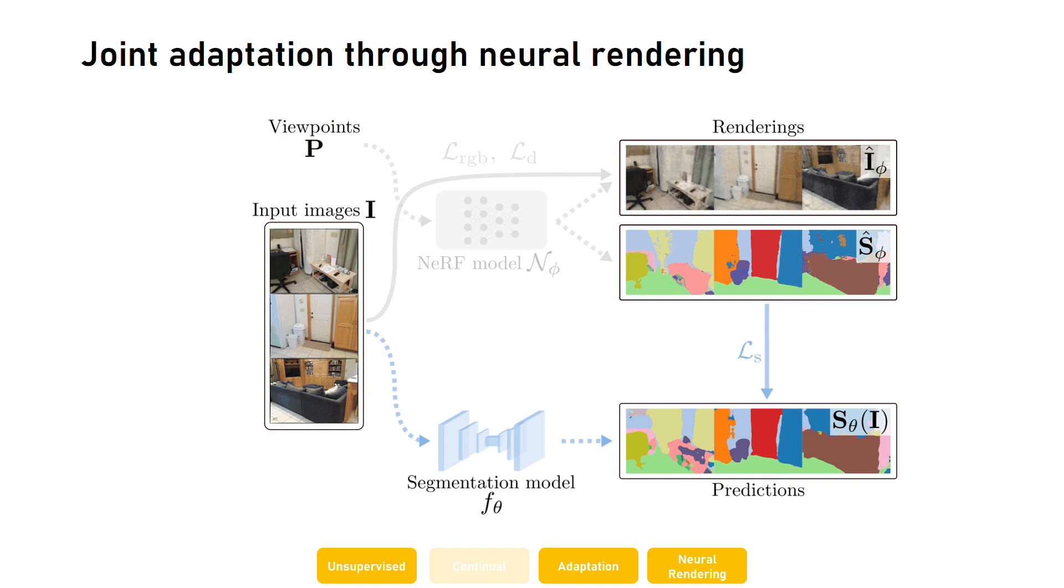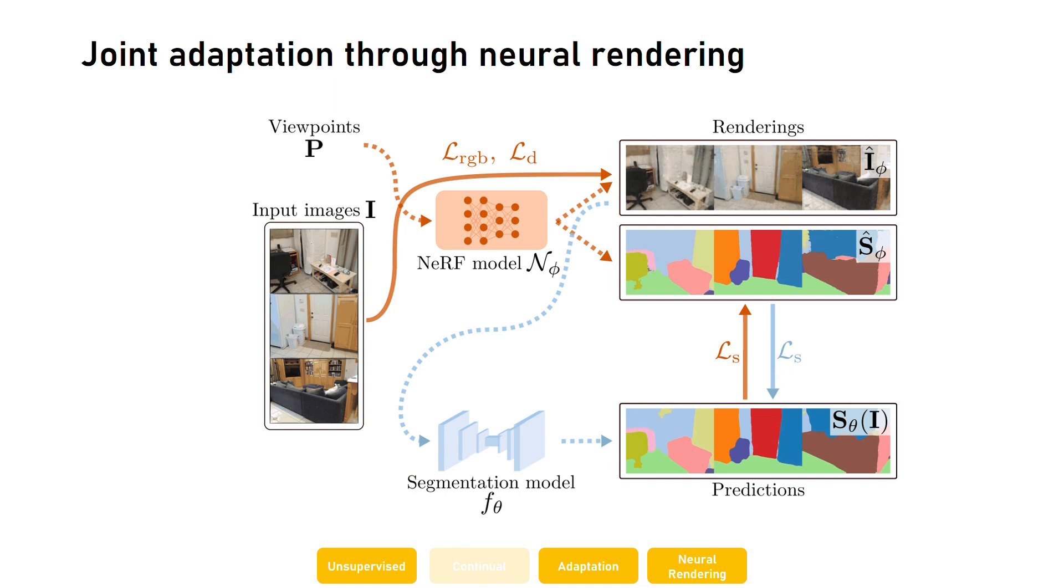In a second stage, this 3D representation can be used to render multi-view consistent semantic labels, which we use as pseudo-labels to adapt the 2D network. However, our setup provides additional advantages. On one hand, given the ability of semantic NeRF to generate photorealistic images, we can directly use its color renderings as input to the segmentation model, removing the need to store images for the model adaptation. More importantly, given the full differentiability of our setup, we can jointly adapt semantic NeRF and the 2D segmentation model by mutually supervising each of them with the output of the other one.